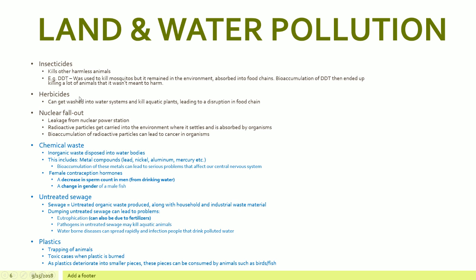Herbicides can get washed into water systems and kill aquatic plants, leading to disruption of the food chain. A nuclear fallout denotes the leakage of a nuclear power station, and radioactive particles can cause cancer. Chemical waste — inorganic waste disposed into water bodies — includes metal compounds like lead, nickel, aluminum, and mercury. Bioaccumulation of these metals can lead to serious problems in the human body, specifically the central nervous system. Waste including female contraceptive hormones, if it gets into the water we drink, can reduce sperm count in men and change the gender of some male fish.